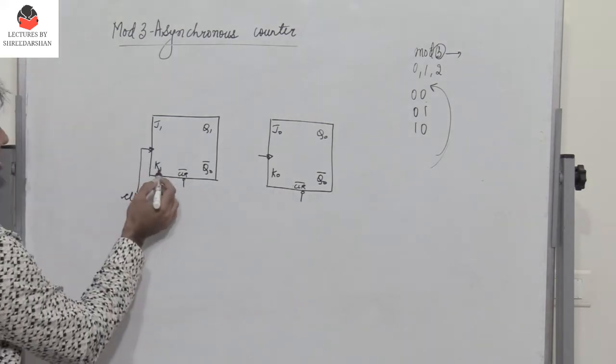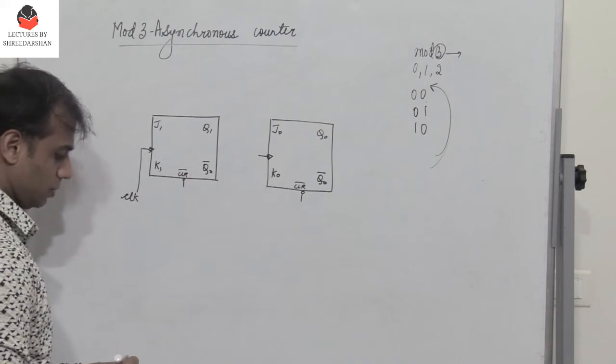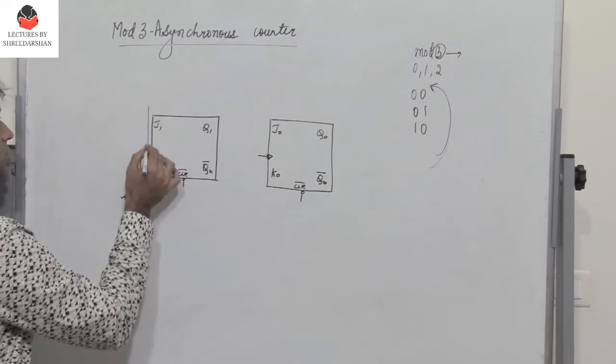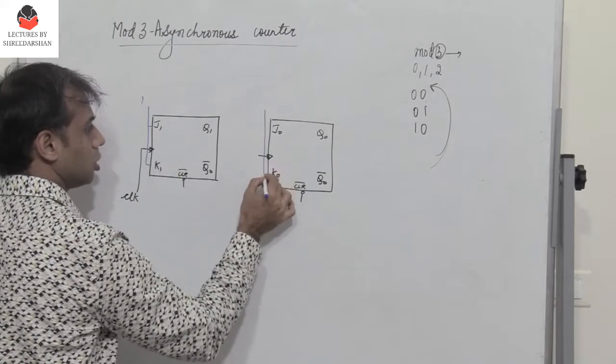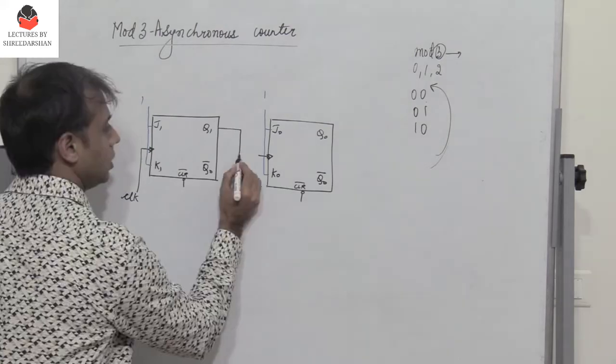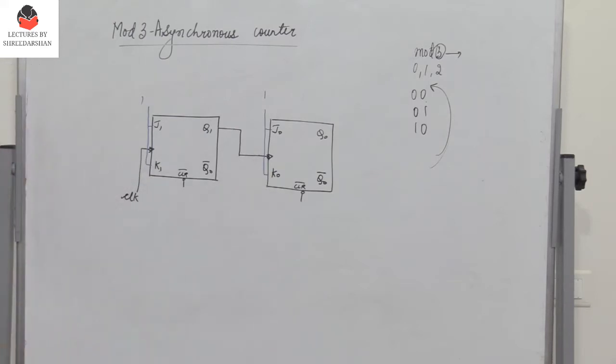You have clear here, and j1 k1, j0 k0. If both inputs of J and K are tied to 1, then the output toggles. We've seen that we can design a mod 4 counter if the output of q1 is given as the clock input to the next flip-flop, as we've seen in asynchronous counter design.